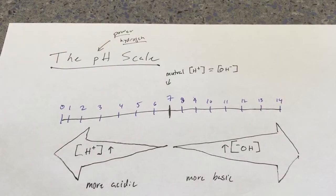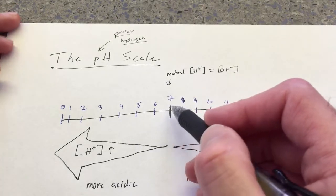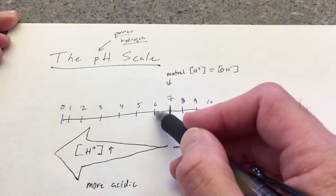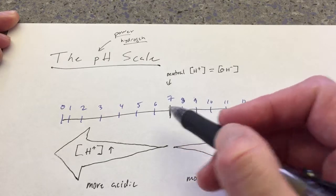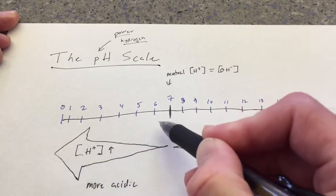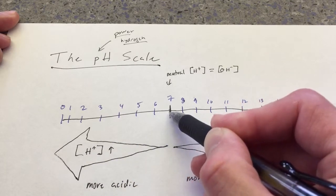Now, one more thing which we have to understand about the pH scale is that it is logarithmic. So what do we mean by this? That we mean that for each unit change, so for example, from 7 to 6, that means that there is 10 times more hydrogen ions at pH 6 than there are at pH 7.